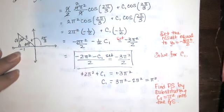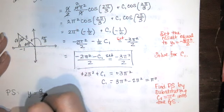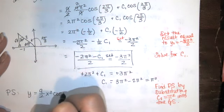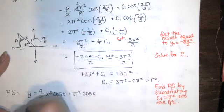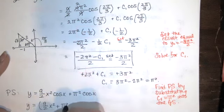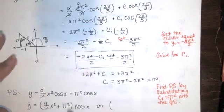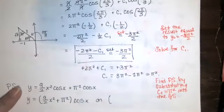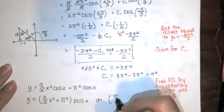With c₁ = π², the particular solution is y = (9/2)x²cos(x) + π²cos(x), or factoring out cosine: y = cos(x)·(9x²/2 + π²). The interval of existence is (π/2, 3π/2), since our derivation required sec(x) — meaning cos(x) ≠ 0 — and the initial condition lies on this interval.